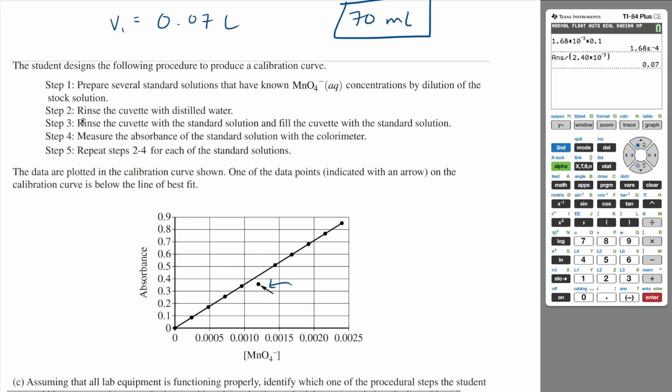If you look at step three, step three tells you to rinse the cuvette with standard solution. And you do this after rinsing the cuvette with distilled water. Now, if you neglect this part of step three, what's going to happen is that the distilled water is going to stay in your cuvette.